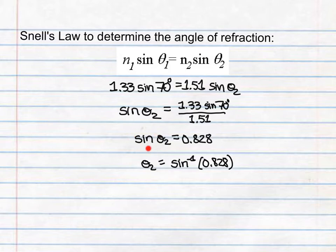If we solve for sine of theta 2, we will have that equaling 1.33 times sine of 70, divided by 1.51. If I take sine of 70 and divide these numbers out, this is 0.828. To solve for theta 2, I have to take the inverse sine of 0.828, which gives me about 56 degrees for the angle of refraction.